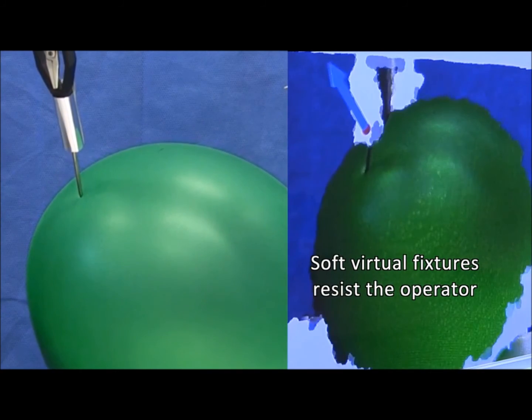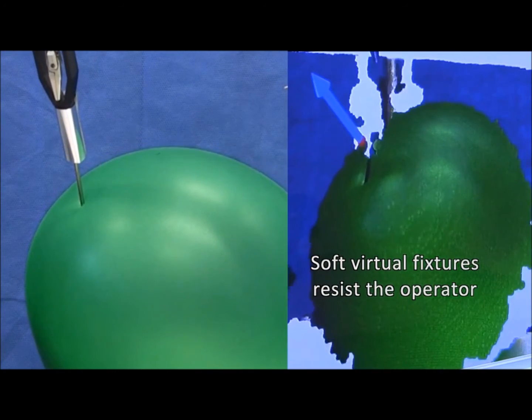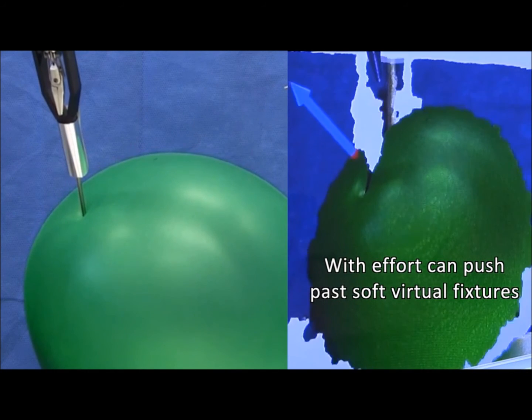In a soft virtual fixture, the operator can overcome the virtual fixture with effort and make contact with the object.